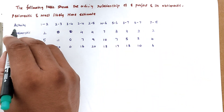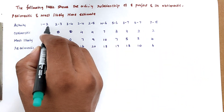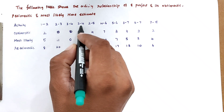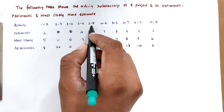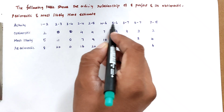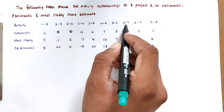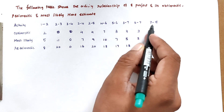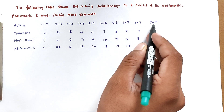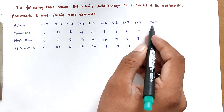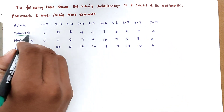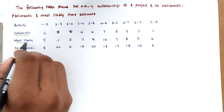The activities are: 1-2, 2-3, 3-4, 2-4, 2-5, 4-6, 5-6, 3-7, 6-7, and 7-8. The corresponding optimistic time, most likely time, and pessimistic time are given for each activity.